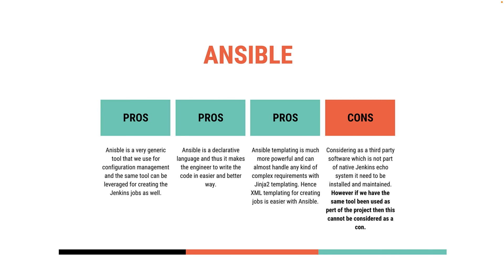That's where Ansible comes into picture. Ansible is a very generic tool, and if you're already using it in your project ecosystem, this is a must-go tool for creating Jenkins jobs, because Ansible has a Jenkins module you can use to talk to Jenkins and create jobs. Once Ansible comes into picture, it all becomes declarative, making it easier for engineers to write code. Ansible also has a very rich templating language — Jinja2 — which you can leverage for any complex job requirements, including conditions and looping.